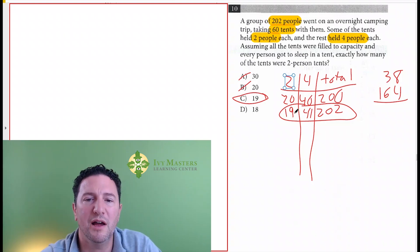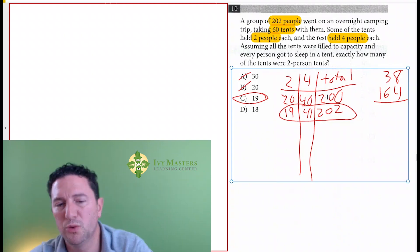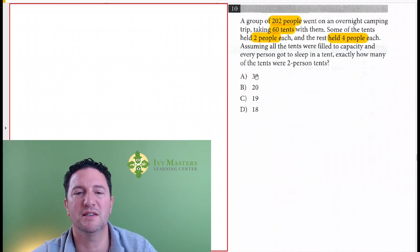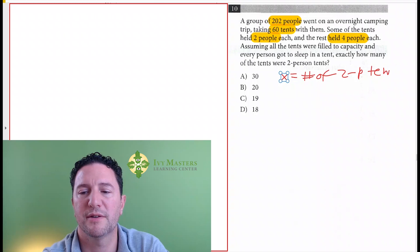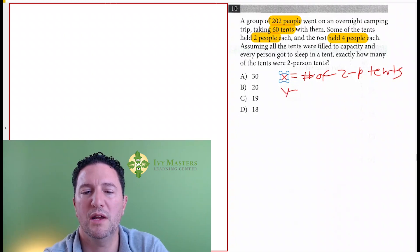Before we move on, I'm going to show you an alternative way to solve it, which would be writing a system of linear equations. So let's say x equals number of two-people tents.